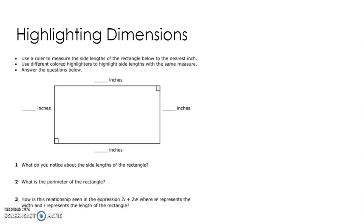And what is the perimeter of the rectangle? So you're going to be figuring out perimeter on this one. And then how is this relationship seen in the expression 2L plus 2W, where W represents the width and L represents the length, the length of the rectangle.